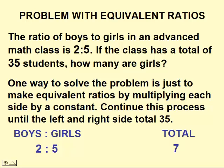Remember, we're looking for a total of 35. So we'll start by making an equivalent ratio, multiplying the left and right side by 2. So this would be an equivalent ratio, 4 to 10, giving us a new total of 14.